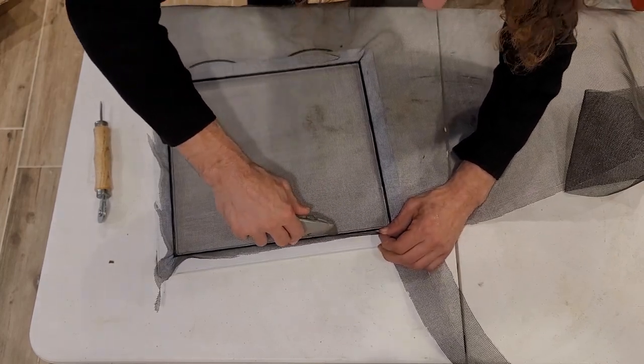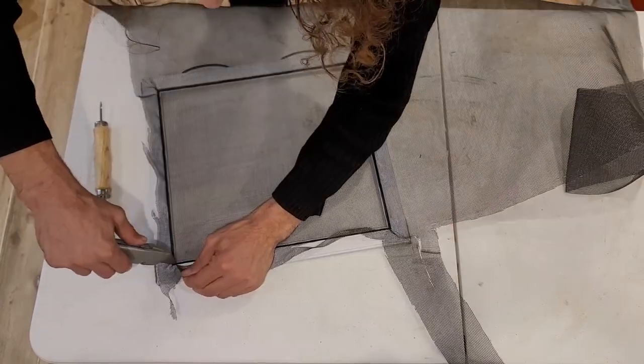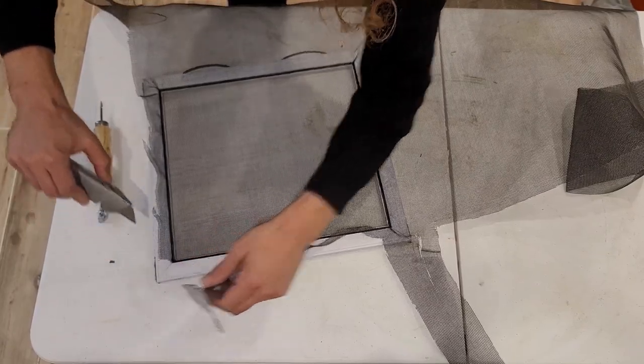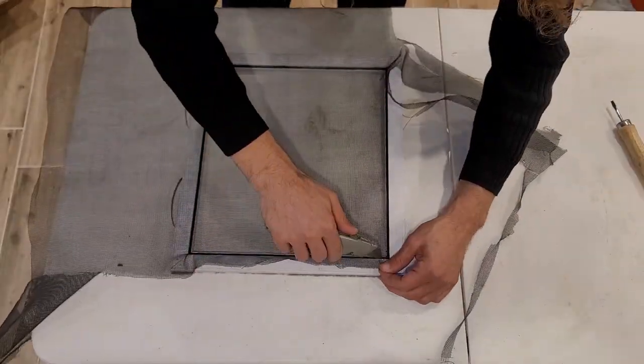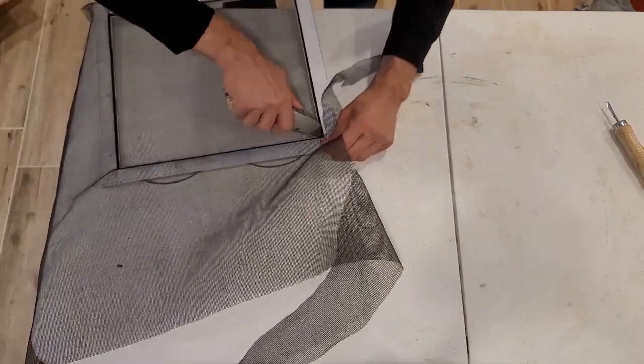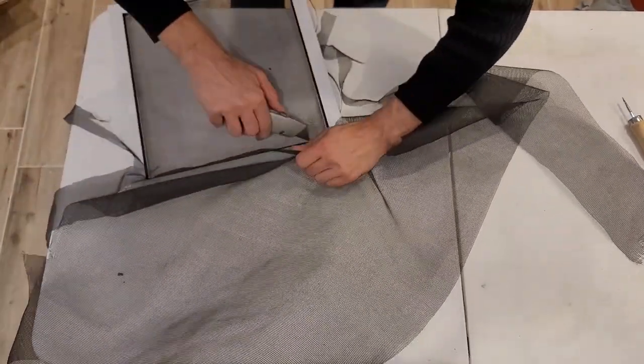Once you've gone all around the perimeter and pressed the spline into the frame, just use a box cutter knife and cut around the outside edge of the spline to get rid of any excess screen.